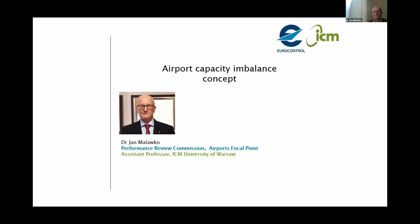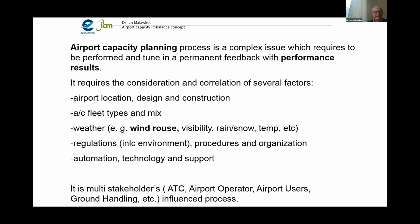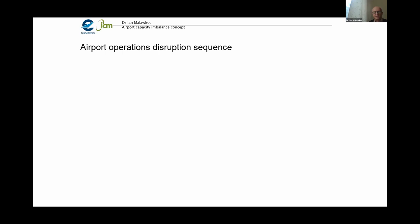Very good morning. It's my great pleasure to have this presentation for such a numerous and prestigious audience. Airport capacity planning is a complex issue requiring permanent feedback with performance results. It requires consideration of several factors: airport location, design, construction, aircraft fleet types and mix, weather, regulations including environment, automation, technology, and support. It is a multi-stakeholder influence process. To illustrate the purpose of this study — the determination of airport runway system capacity resilience — the potential operational constraint disruption sequence will be analyzed.